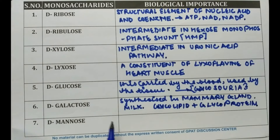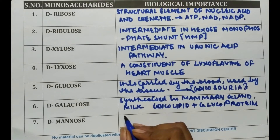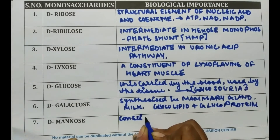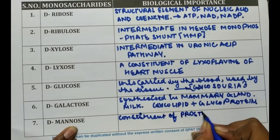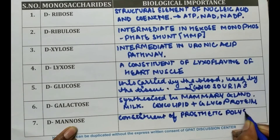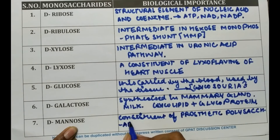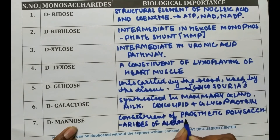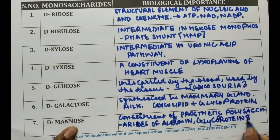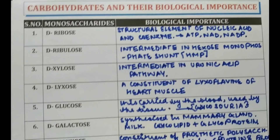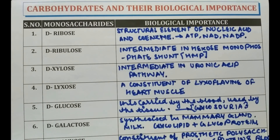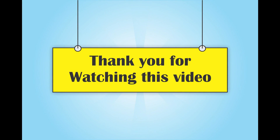D-mannose is a component of polysaccharides of albumin, glycoproteins, and blood groups. That's it for the biological importance of carbohydrates. Thank you for watching this video.